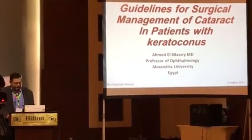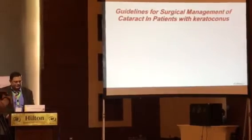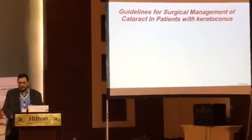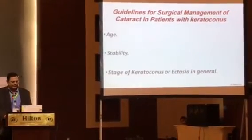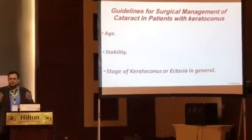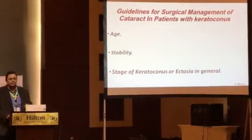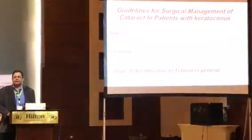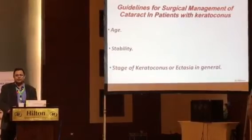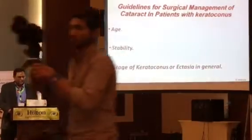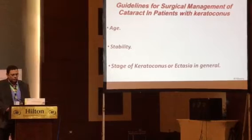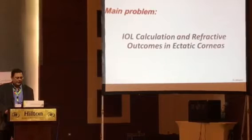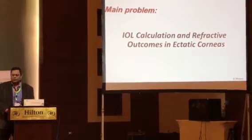The problem of cataract keratoconus may have been highlighted by Dr. Amr Bessa in his talk and the questions later on by the panelists. I'm going to simplify how to deal with the patient with cataract keratoconus who develops cataracts, and concentrate on three main pillars: the age, the stability of the cornea, and the stage of keratoconus or ectasia in general. The main problem, as all of us know, is the IOL calculation and refractive outcomes in ectatic corneas.